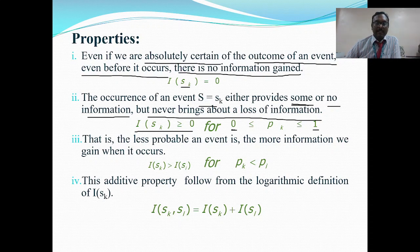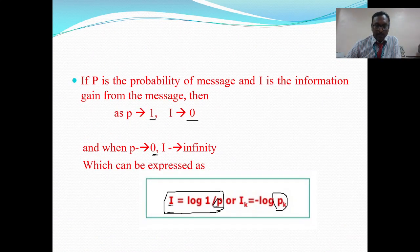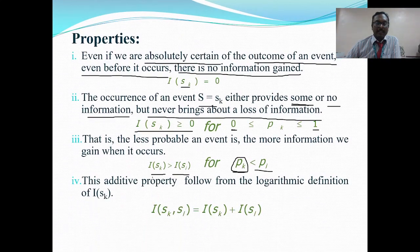Property 3: Less probable an event, more information. If we compare two events and the first event has more information than the second, then the first event has less probability than the second — they are in inverse proportion. A more informative event will have less probability, and a less informative event will have more probability. This is the third property.